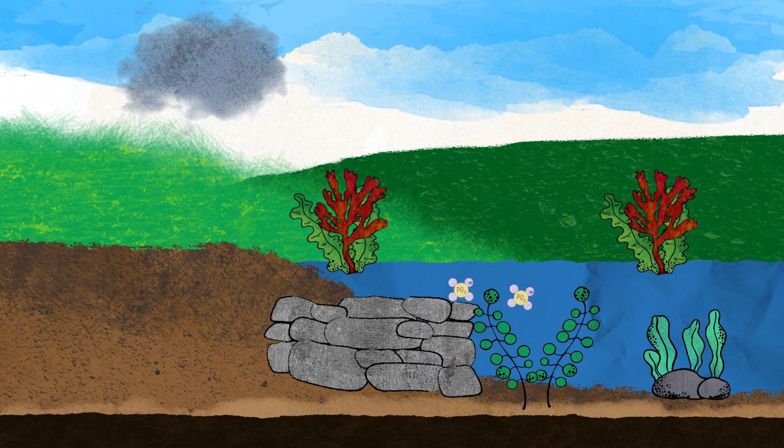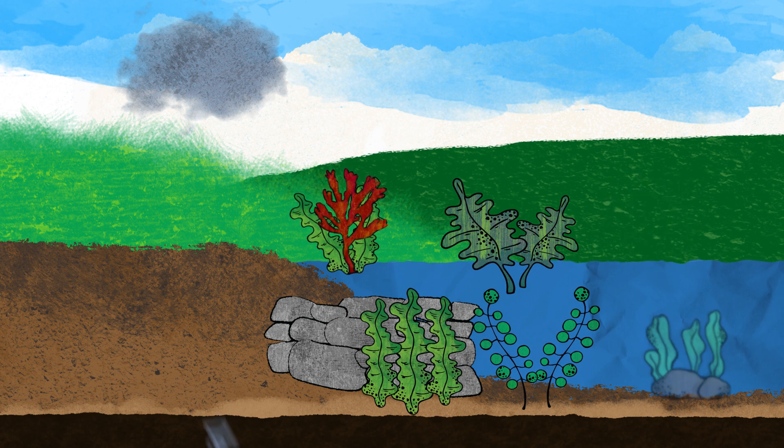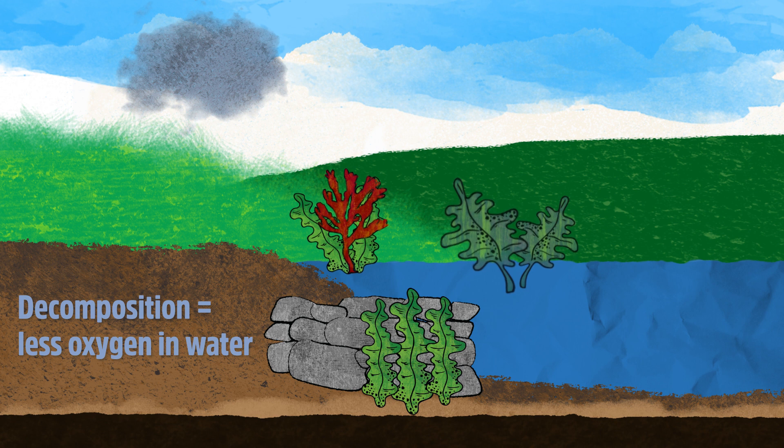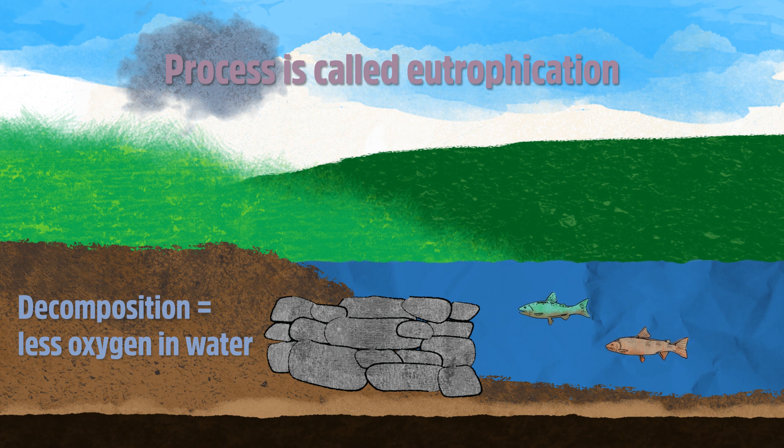Increased phosphate and nitrate allows algae and other weeds to grow quickly. When the algae die, they decompose. The decomposition process lowers the amount of oxygen in the water. This process, called eutrophication, can kill fish and other aquatic life.